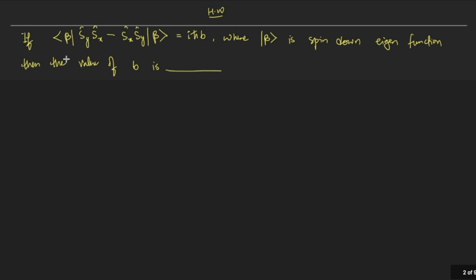Let me first quickly solve that homework question and then we'll take today's new question. This question is based on the concept of commutation. There are several things included: direct notation, spin angular momentum operators, and the commutation of operators. I've discussed this in detail in the previous video — there's a link if you haven't watched Part 2.